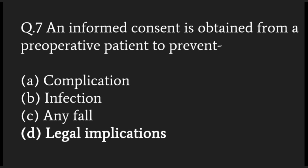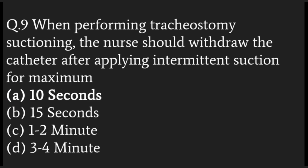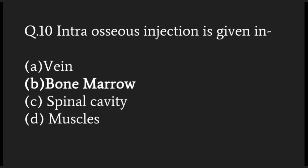An informed consent is obtained from a perioperative patient to prevent legal implications related to it. 98.6 degrees Fahrenheit is equal to 37 degrees Celsius. When performing tracheostomy suctioning, the nurse should withdraw the catheter after applying intermittent suction for a maximum of 10 seconds.